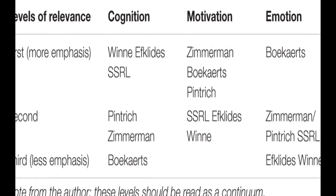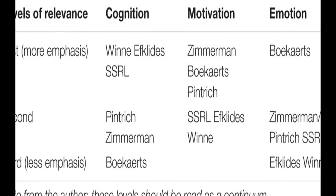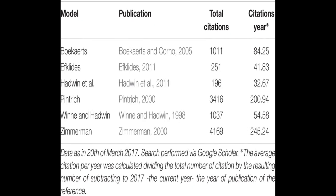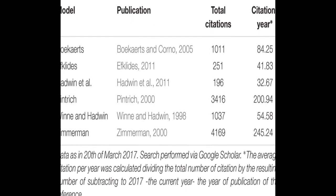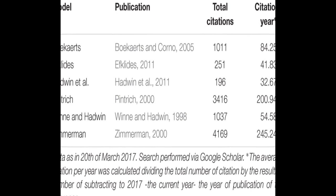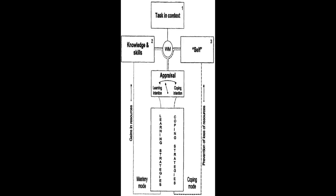The models are then compared in terms of phases and subprocesses, how they conceptualize metacognition, motivation, and emotion, top-down/bottom-up, automaticity, and context.